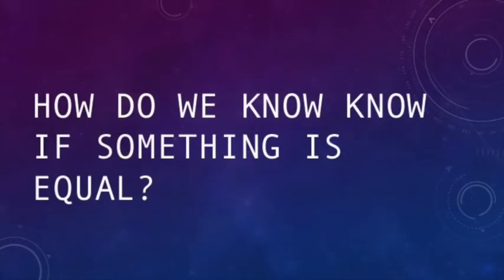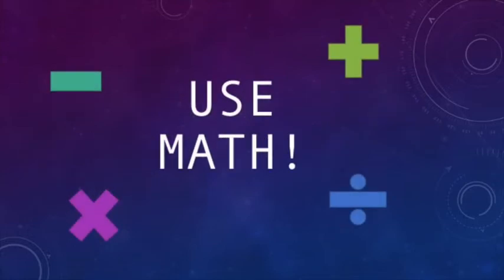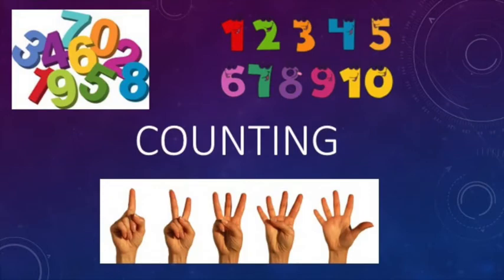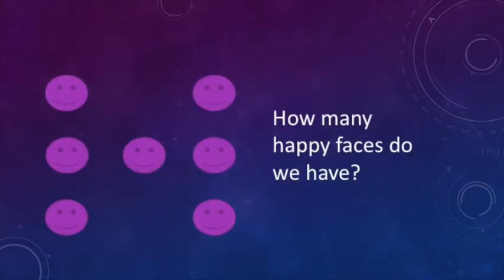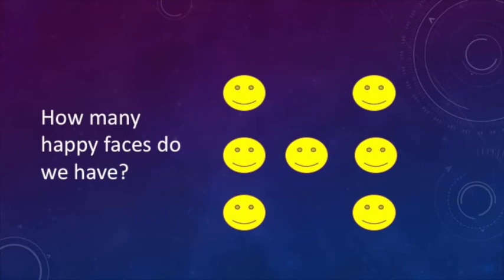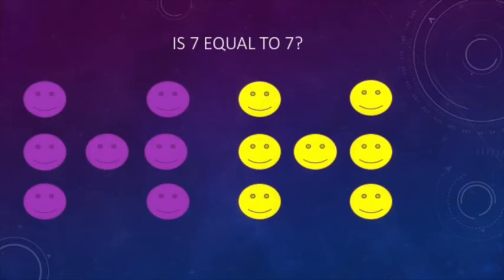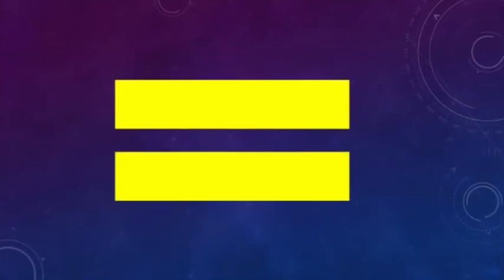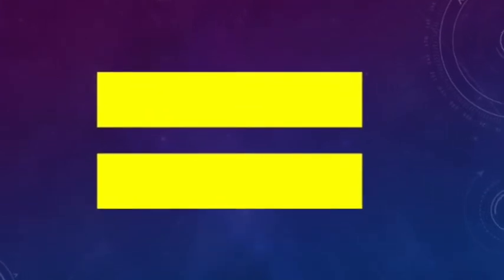How do we know if something is equal? One way to find out, or multiple ways, is we can use math. Let's start with counting. How many purple happy faces do we have? How many yellow happy faces do we have? Is seven equal to seven? Yes, seven is the same amount as seven. Now that we know that they are the same amount, then we know that they are equal.